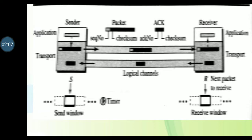This diagram shows the outline of the Stop-and-Wait protocol. It is a connection-oriented protocol. Only one packet and one acknowledgement can be in the channels at any time. This Stop-and-Wait protocol provides both flow and error control.